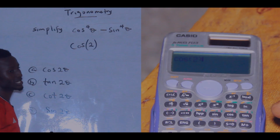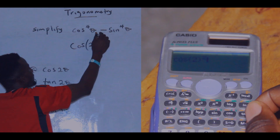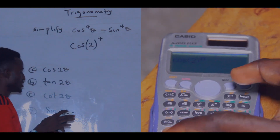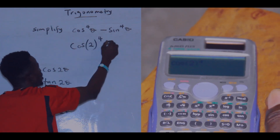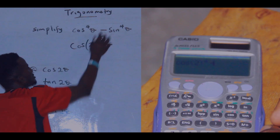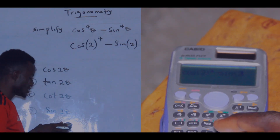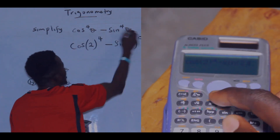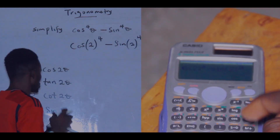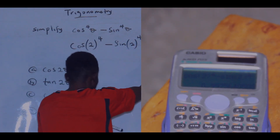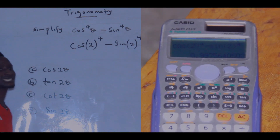Press two, close the bracket, then press raise to the power four. Notice that cos is raised to a high power. Then shift to the middle where we have minus, press minus, then press sin. Substitute the same value, two, close the bracket, raise to the power four, then press equals. You observe that the value you get is approximately 0.998.